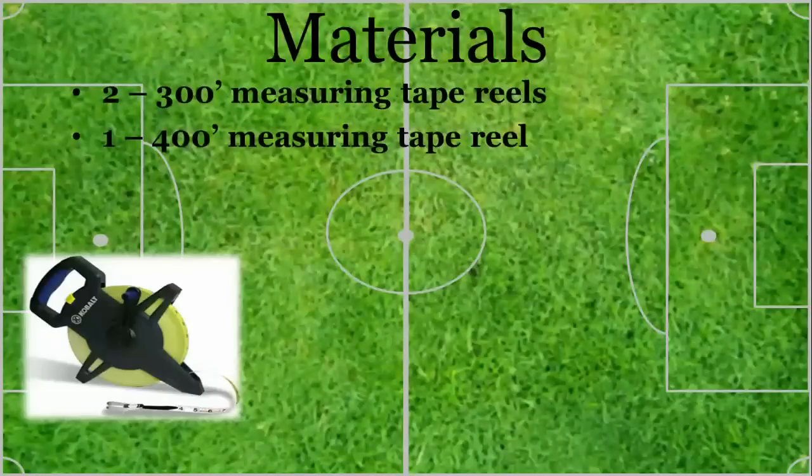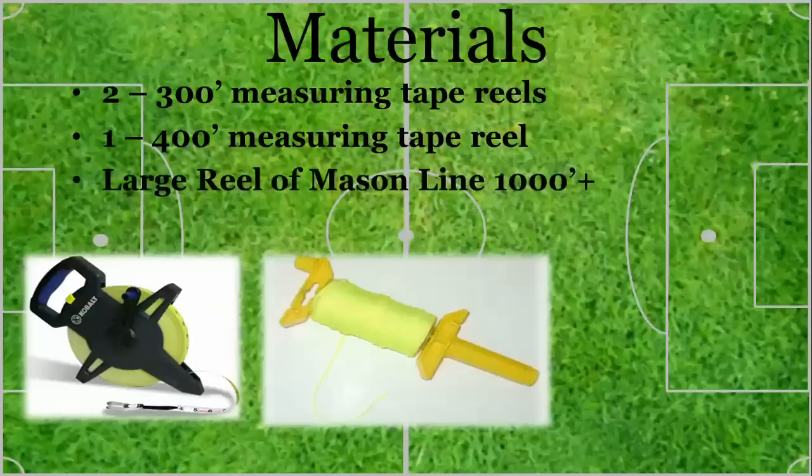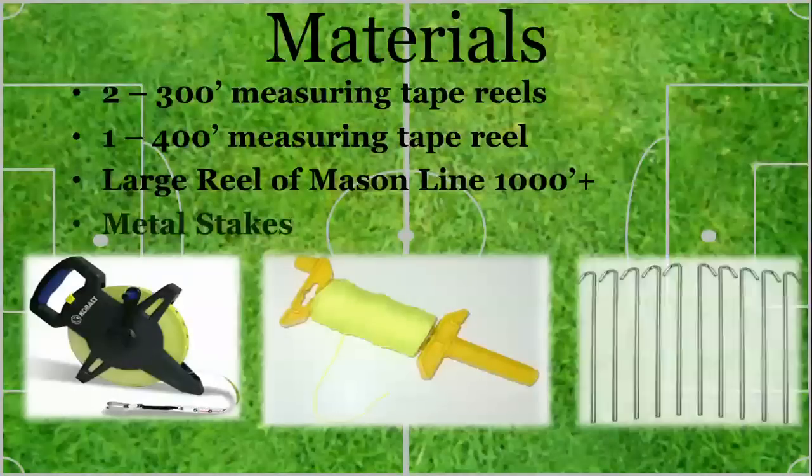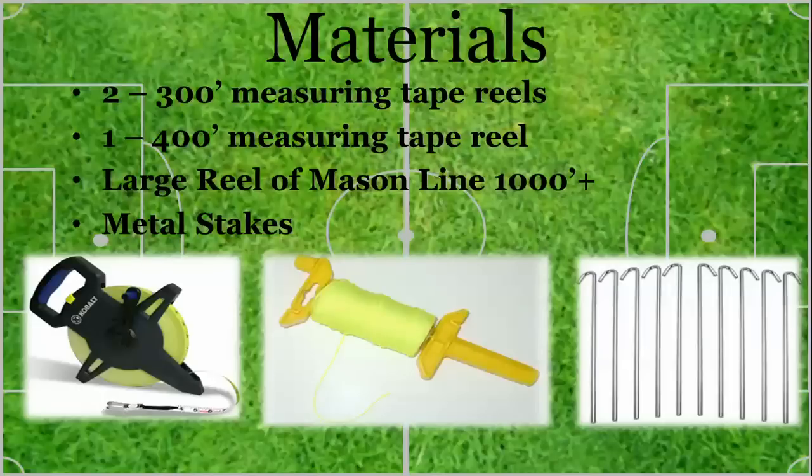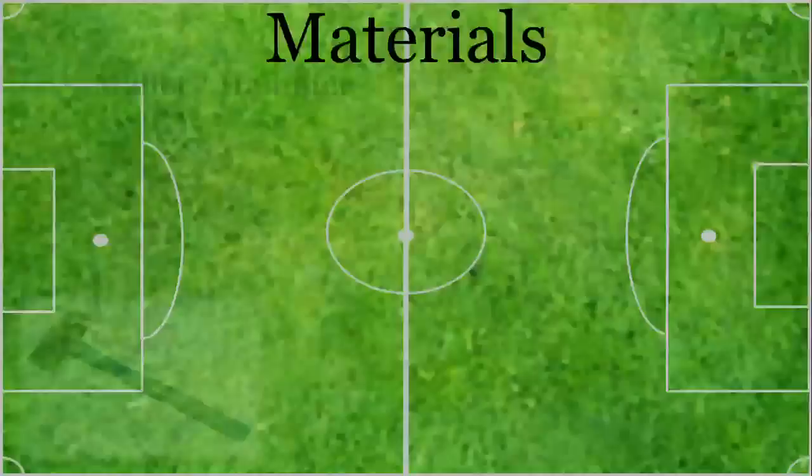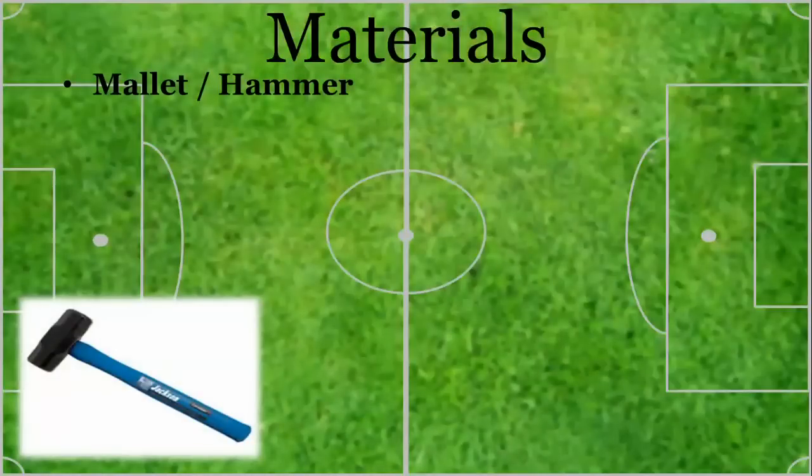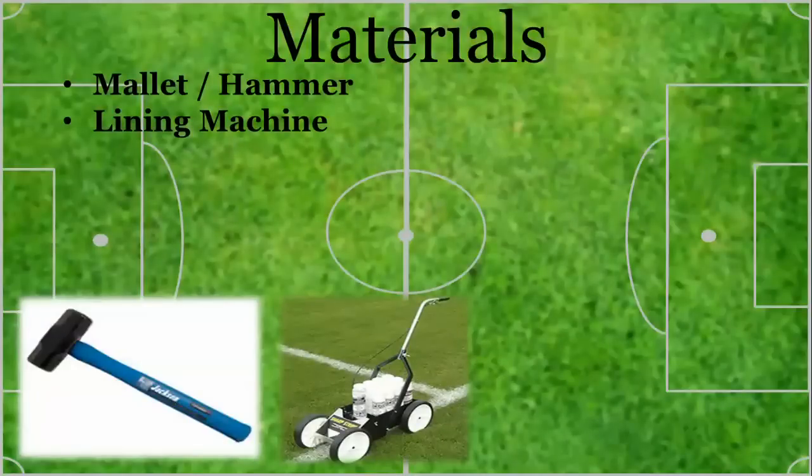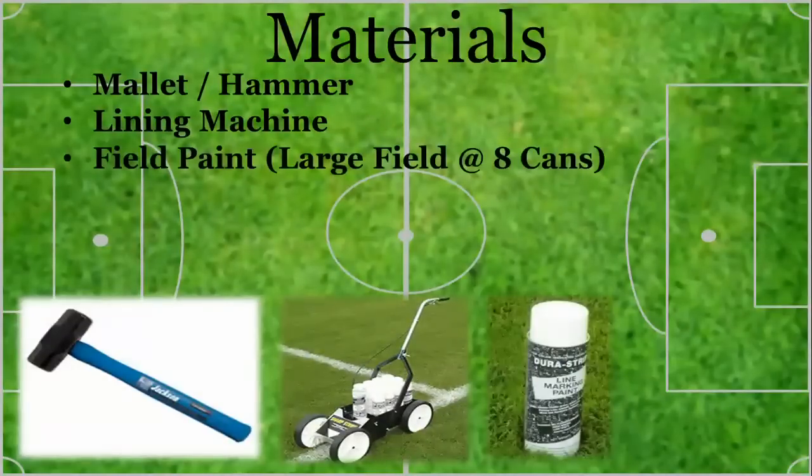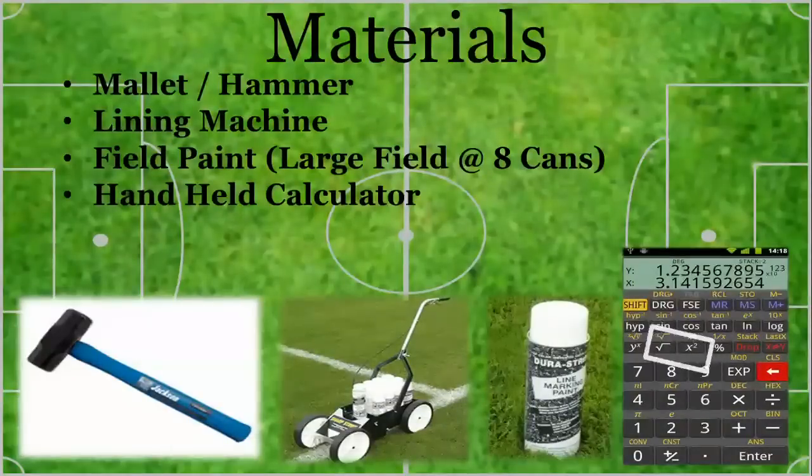Before aligning the field, you'll need to pull together some materials. The first is a couple of 300-foot measuring tapes and one 400-foot measuring tape. You'll also need a large reel of mason line, 1,000 feet should be sufficient. In addition, you'll need 15 to 20 field stakes, a mallet or hammer, a lining machine, plenty of paint, and a calculator that handles square root functionality.